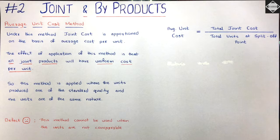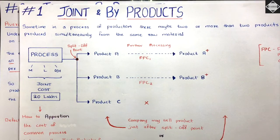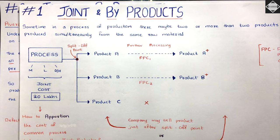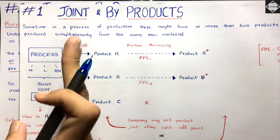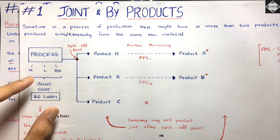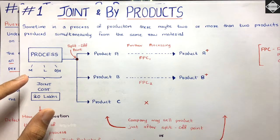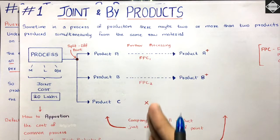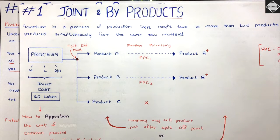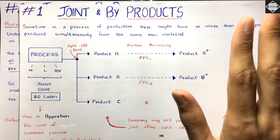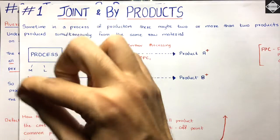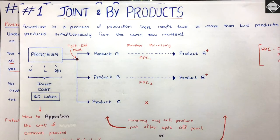You take the total joint cost — the cost incurred in the common process. For example, let's say the joint cost is 20 lakhs. Joint cost also has another name: pre-separation cost or pre-split-off cost, because it is incurred before the split-off point. After the split-off point, any cost incurred is the further processing cost, also known as post-separation cost. Further processing cost is known separately, but the problem is that joint cost is incurred in combination — we don't know how much was incurred for each product.